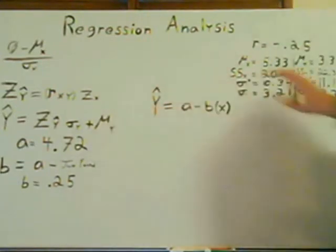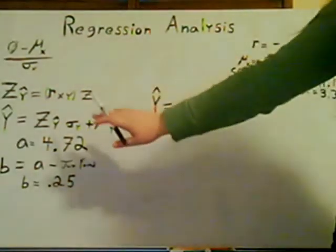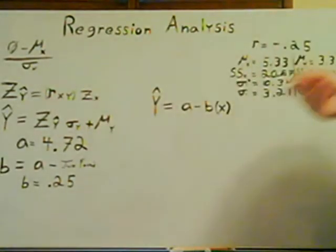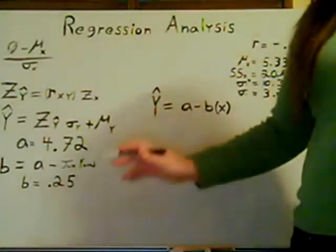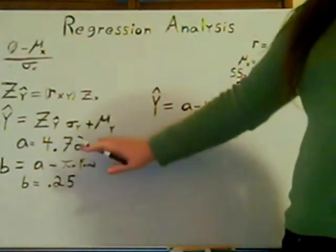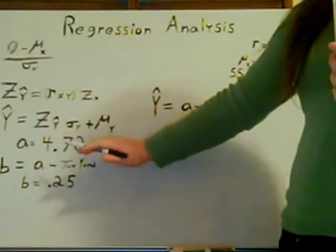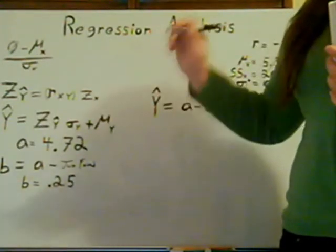Well, we've got all that information too, so now we can just plug all that in. That should give you 4.72, which is one of your points now on the graph. We'll call it A. Okay. So, A should equal 4.72.